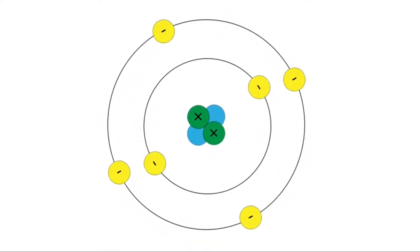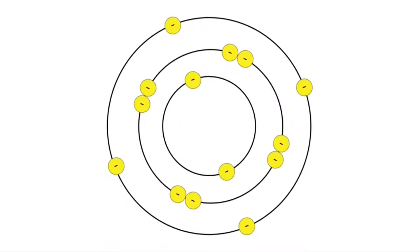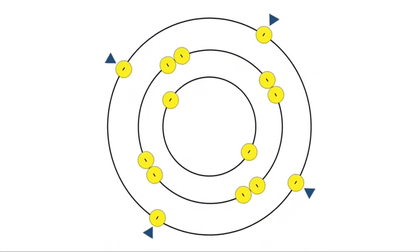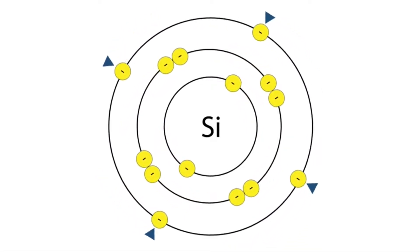Each valence shell can hold a maximum number of electrons before they must occupy the next valence shell depending upon the atomic number of an atom. Semiconductor materials like silicon and germanium have four valence electrons in their outermost shell.